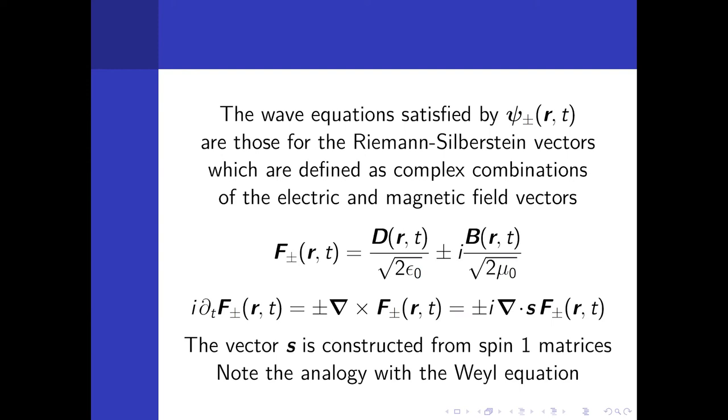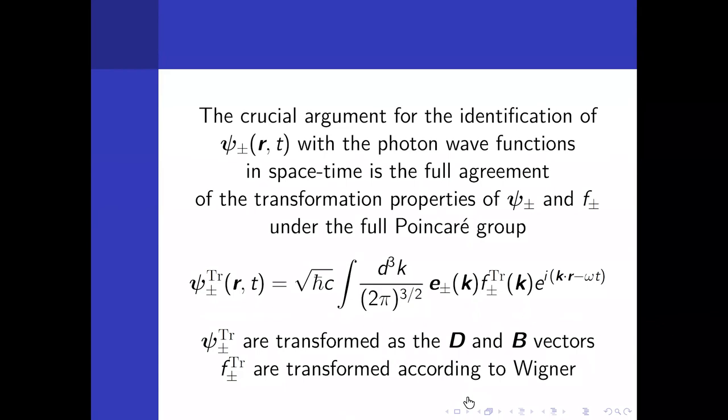This is the equation that this vector satisfies, which is equivalent to Maxwell equations. There is an interesting analogy here. This cross product, the curl of F, can be written in terms of the spin matrices for spin one particles and photons are spin one particles. So we have perfect analogy with the Weyl equation for neutrinos, for massless spin one half particles. The only difference is that the vector s, which refers to spin one matrices, must be replaced by Pauli matrices sigma for spin one half particles.